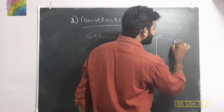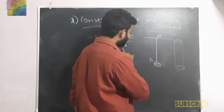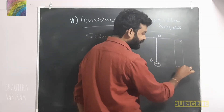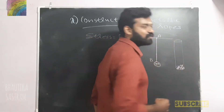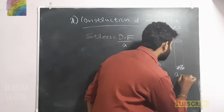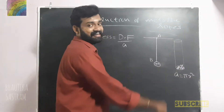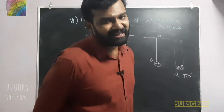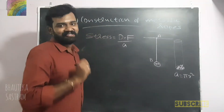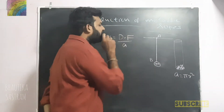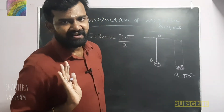The metallic wire has a cylindrical shape. Looking at the cross-sectional area, the metallic rope has a cross-sectional area. With radius r, the cross-sectional area is equal to πr². The cross-sectional area number and stress is equal to force divided by area, where area equals πr².